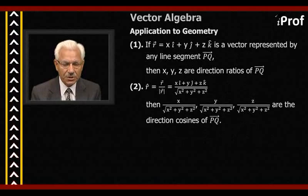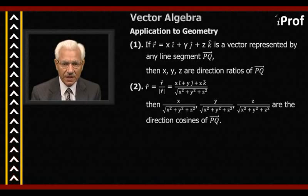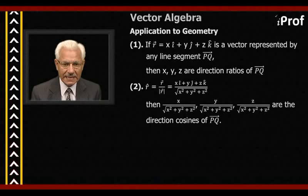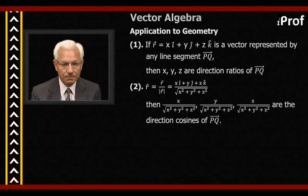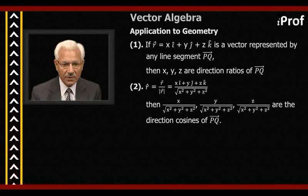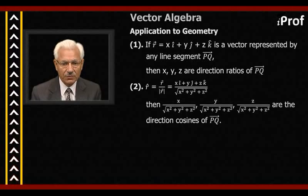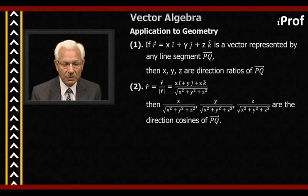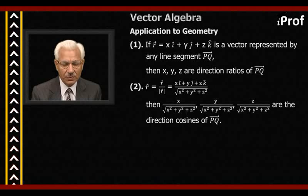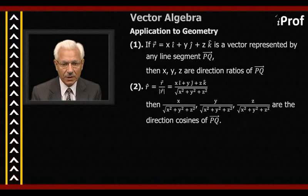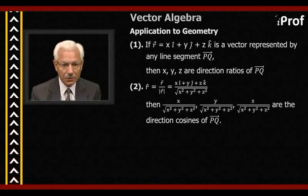Now we take up some applications of vectors to geometry. First, if r equals xi plus yj plus zk is a vector represented by any line segment PQ, then x, y, z are direction ratios of PQ. Second, r-hat equals r vector divided by modulus of r, that is (xi plus yj plus zk) divided by square root of (x squared plus y squared plus z squared). The components — x, y, z each divided by that square root — are the direction cosines of PQ. Thus the components of a unit vector give the direction cosines.